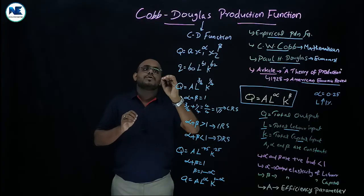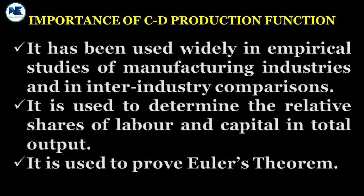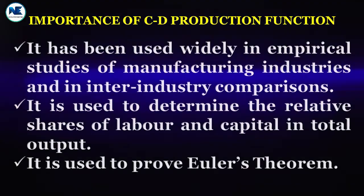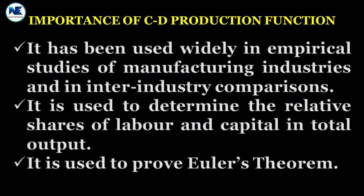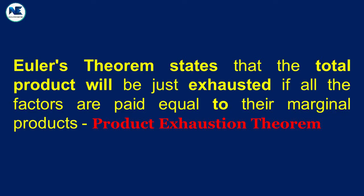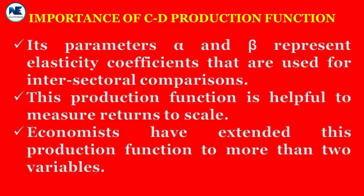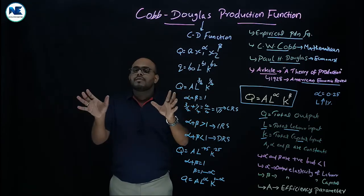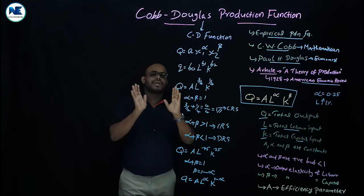The importance and uses of the CD function include: first, it has been widely used in empirical studies of manufacturing industries and inter-industry comparisons; second, it is used to determine the relative shares of labor and capital in total output; third, it is used to prove Euler's theorem; fourth, its parameters alpha and beta represent elasticity coefficients used for inter-sectoral comparisons; fifth, it is helpful to measure returns to scale; sixth, economists have extended this production function to more than two variables, making it extensively used as an economic tool.